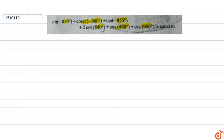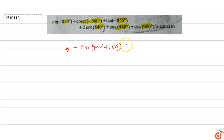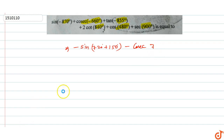Since sin(-θ) = -sin(θ), we get -sin(870°). Now 870° = 720° + 150°. For cosec(-θ) = -cosec(θ), so -cosec(660°), and 660° = 720° - 60°.